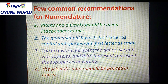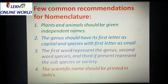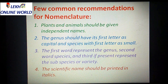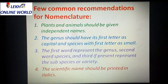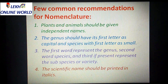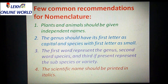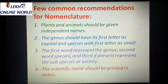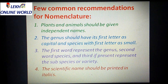Second recommendation: the genus should have its first letter as capital and species with first letter as small. So the first letter of genus is written in capital while the first letter of species is written in small letters. The first word represents the genus, the second word represents species, and the third, if present, represents the subspecies and variety.